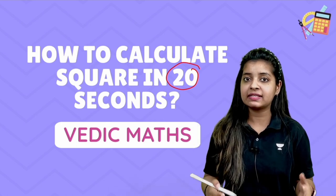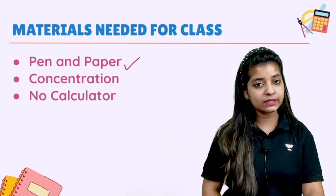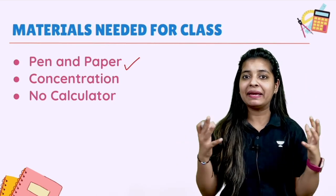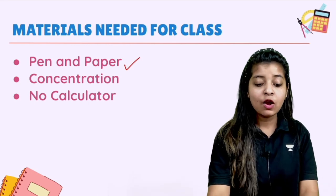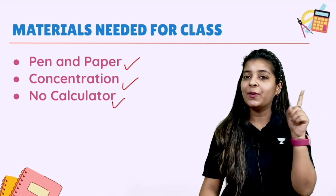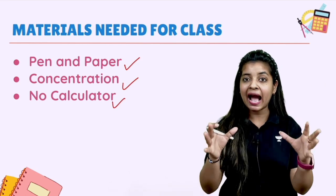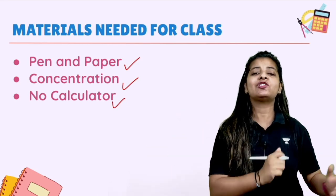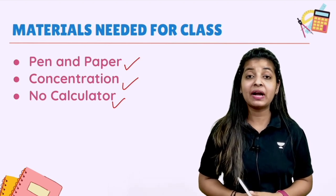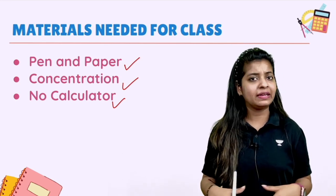We will be requiring some materials — let's have a look at those. We need a pen and paper. Can you arrange that? Of course, any pen and any paper will do. Second, we need concentration. Third material required is no calculator. So, are you guys ready with these materials? Make sure you are sitting with a pen and paper, watching this video with full concentration, and you won't be requiring any calculator.